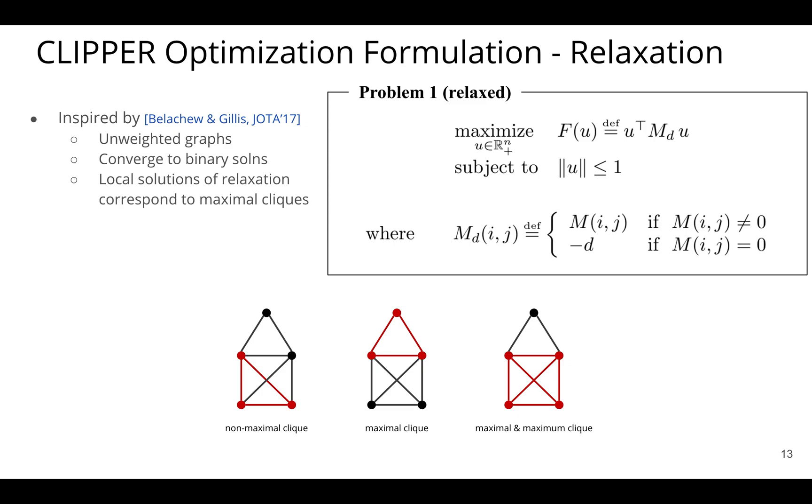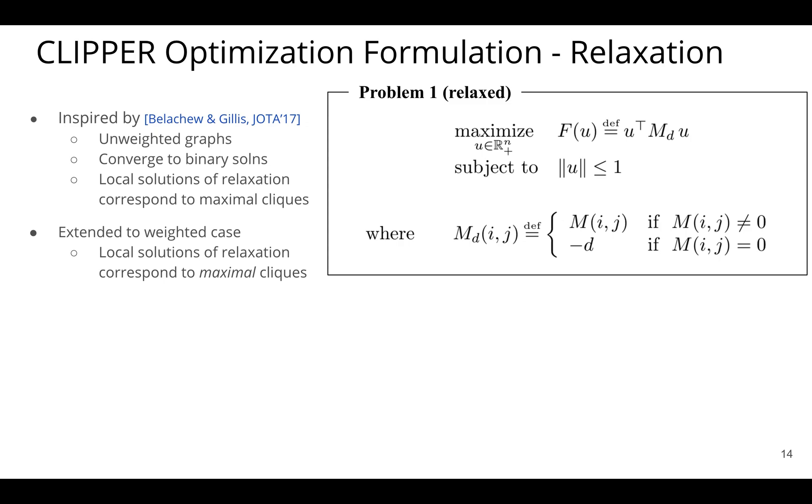Also, a very interesting and important property that they found and were able to show is that local solutions of this relaxation correspond to maximal cliques of the original problem. So we have this nice relaxation that's for unweighted graphs. It has some very nice properties relating to the solutions and correspondences between the relaxed and original versions. And what we did is we took this relaxation and we extended it to the weighted case so that we can apply it to our dense clique problem. And we're still able to show that local solutions of this relaxation somehow correspond to the original problem.